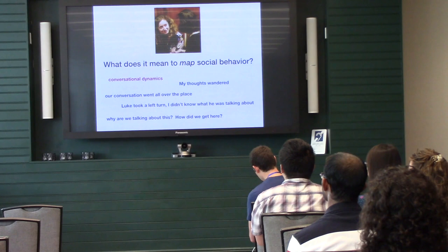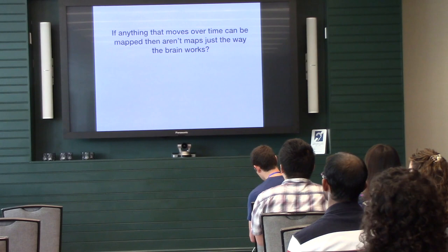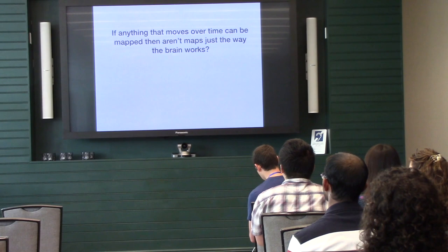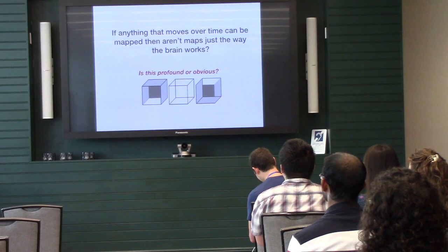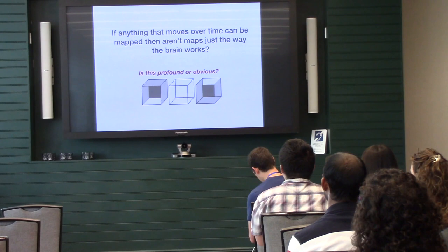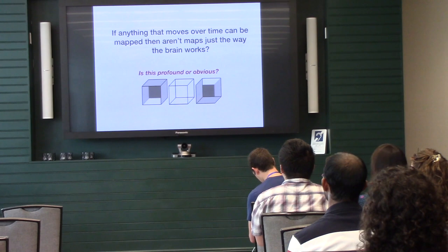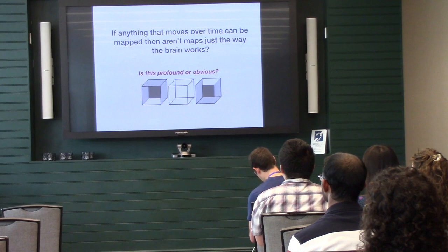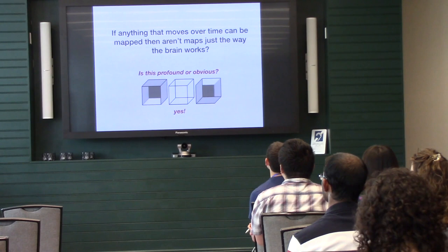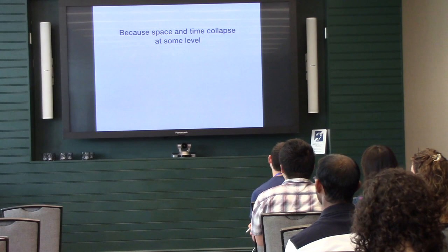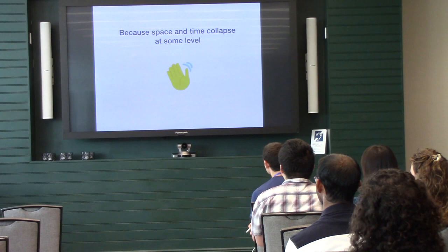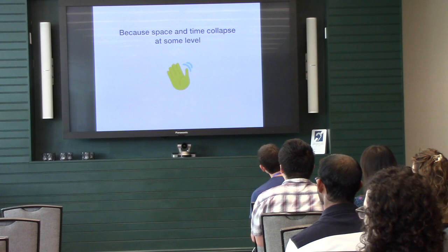But if anything that moves over time can be mapped, then aren't maps just the way the brain works? Am I saying anything profound here? This is the thing I struggled with at 6 o'clock this morning. Is this profound or obvious? This is just movement over time that can be graphed spatially because it can. Therefore, everything in the physical world that is in a dynamic world can be thought of in terms of a map. Is it profound or obvious? Yes, is the answer. It's both. Because space and time collapse at some level.